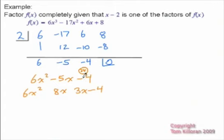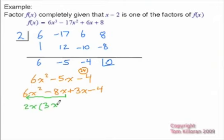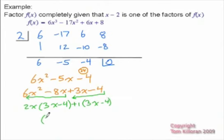We have to figure out which sign is which. Since it's minus 4, there have to be opposite signs. And since it's a negative 5 in the middle, the 8 is going to be negative and the 3 is going to be positive. Then we group and factor. The GCF of the first two is 2x, leaving behind 3x minus 4. The GCF of the second two is just positive 1, leaving behind 3x minus 4. So we can factor it completely as 3x minus 4 times 2x plus 1.